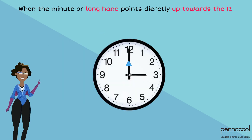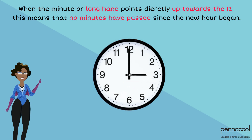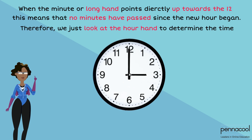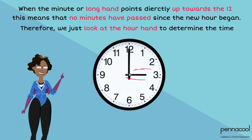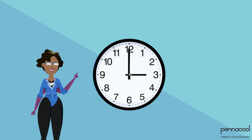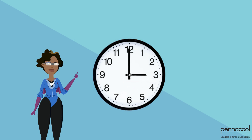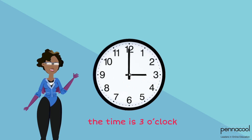When the minute or long hand points directly up towards the 12, this means that no minutes have passed since the new hour began. Therefore, we just look at the hour hand to determine the time. The clock shown has its minute or long hand on 12 and its hour or short hand on 3, meaning the time is 3 o'clock.